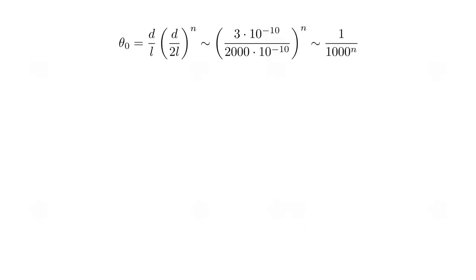Our formula tells us how small theta zero needs to be for the moving ball to undergo n collisions. Taking the diameter of molecules to be three angstroms, and the mean free path to be one thousand angstroms, inside the parentheses we get three over two thousand, after cancelling the common factor of ten to the minus ten. Let's round this to one over one thousand and neglect the leading d over l factor. Then theta zero is roughly one over one thousand to the nth power.